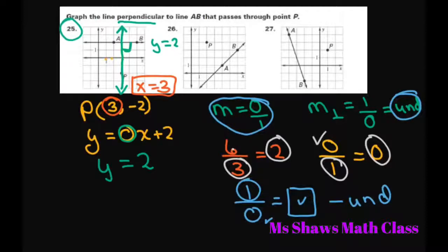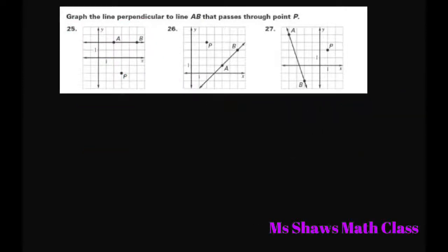So just remember that for perpendicular, 0 slope and undefined are the negative reciprocals. Now the other two are more normal. So let's write down our point here. That's point x is 2, and y is 1, 2, 3, 4.